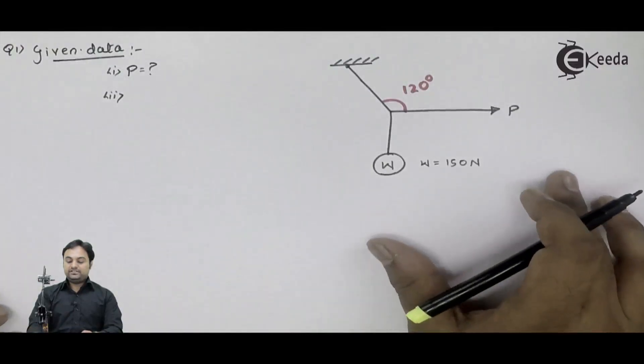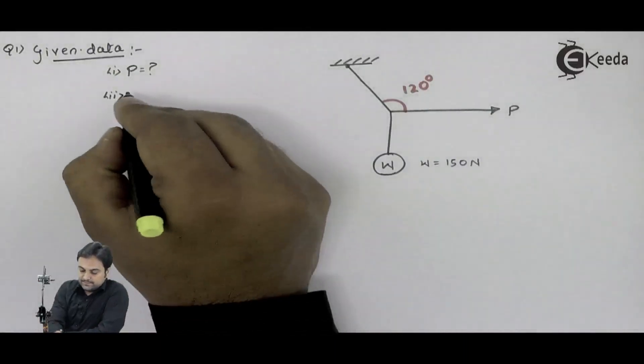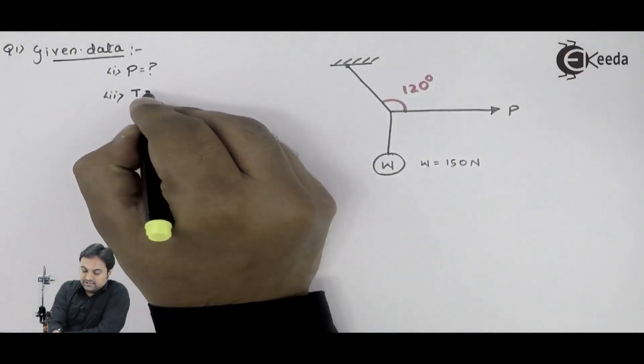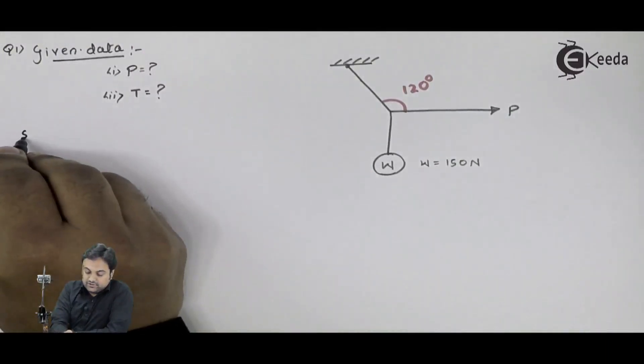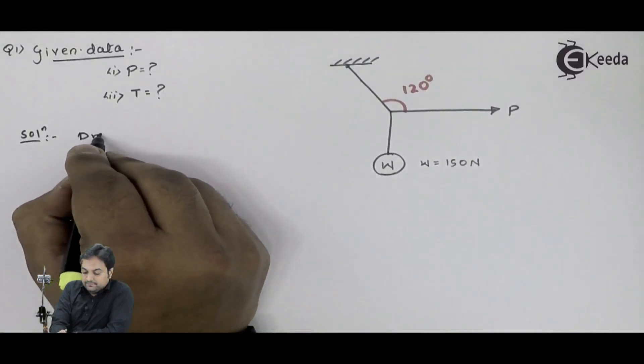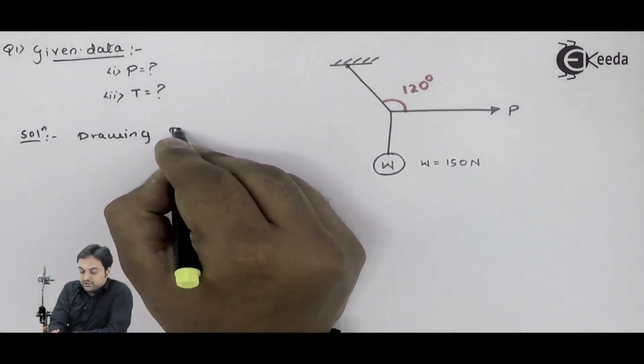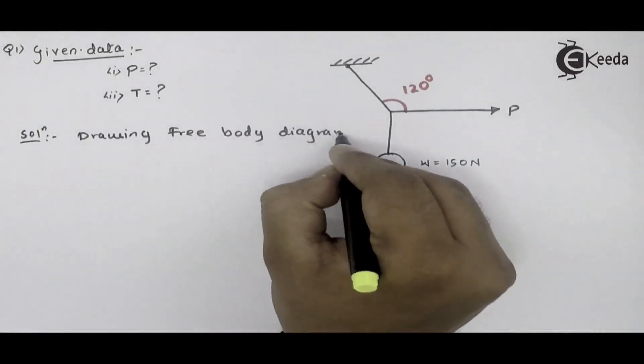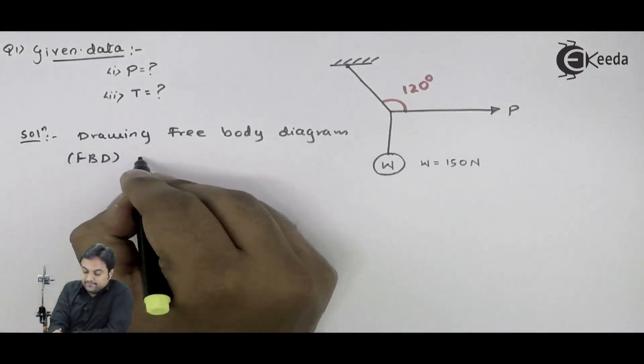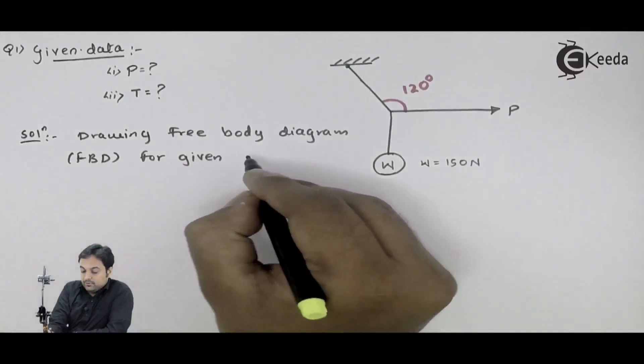So now after this diagram is completed, we can easily start solving. How to solve? Tension I will denote it by letter T. I will write down first solution. Drawing FBD. Now what is FBD? FBD is called as Free Body Diagram. Drawing Free Body Diagram for given problem.